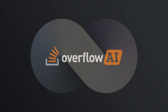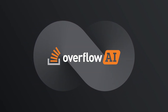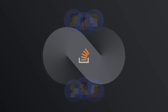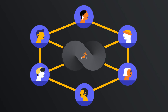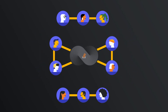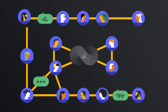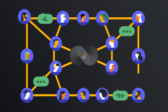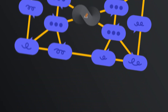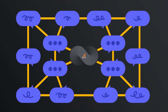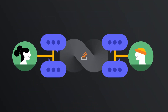Introducing Overflow AI. We're bringing AI power to your Stack Overflow for Teams knowledge community. Available now on Stack Overflow for Teams Enterprise, Overflow AI helps connect employees to knowledge faster. It does the heavy lifting of discovering and disseminating your internal community's knowledge into cohesive answers wherever your teams work, like their web browser, IDE, or messaging apps like Slack.